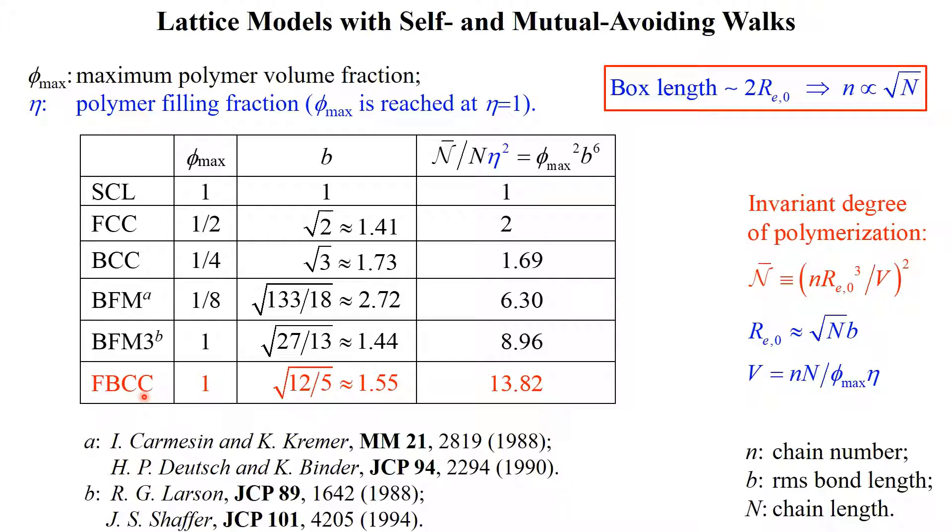Finally, we note that the bond fluctuation model was originally designed to study polymer dynamics by preventing bond crossing, and Schafer also proposed a way of doing this for BFM3. His method can be readily used in our model to enable the simultaneous study of both thermodynamics and dynamics of block copolymer self-assembly that produces sub-10nm domain sizes.